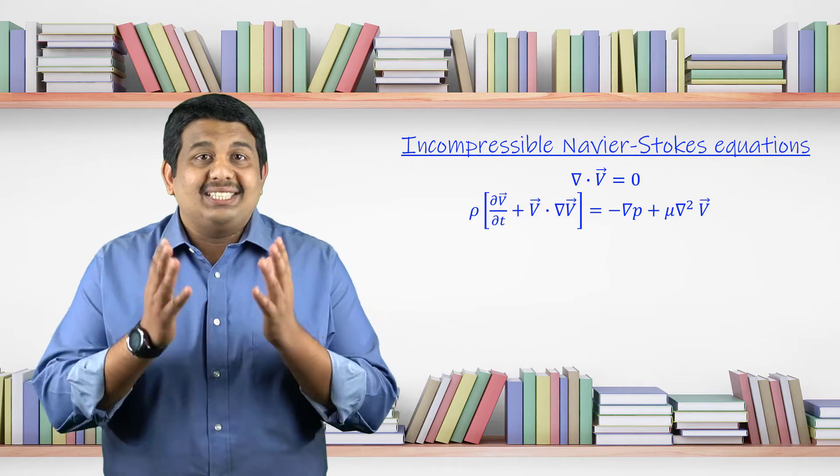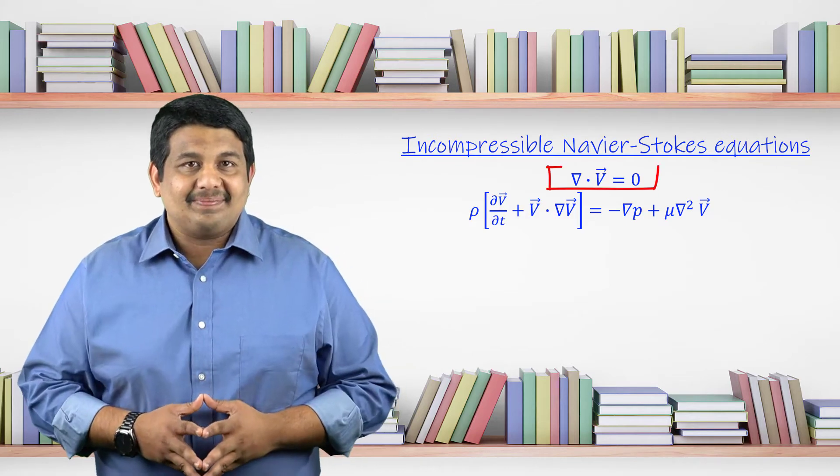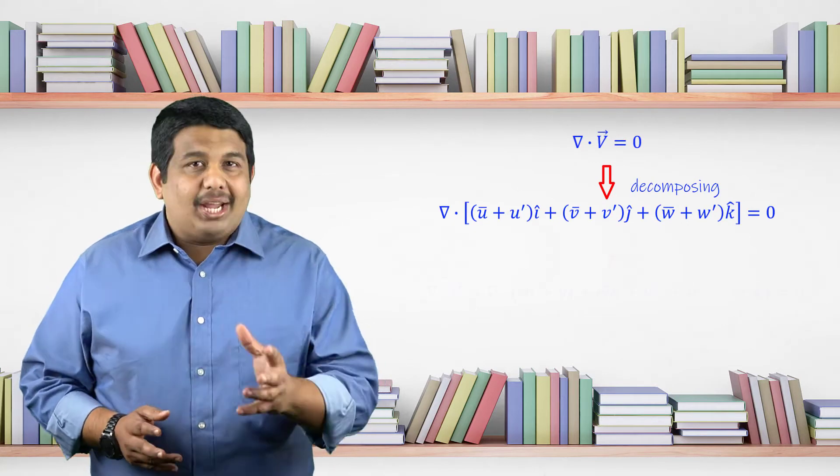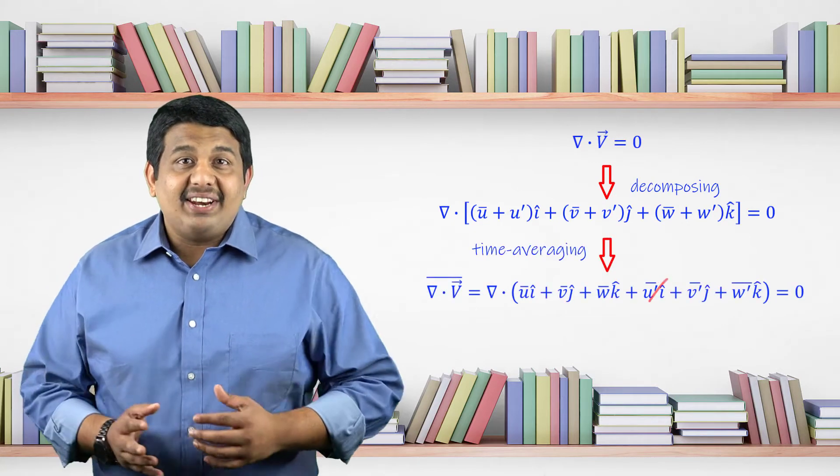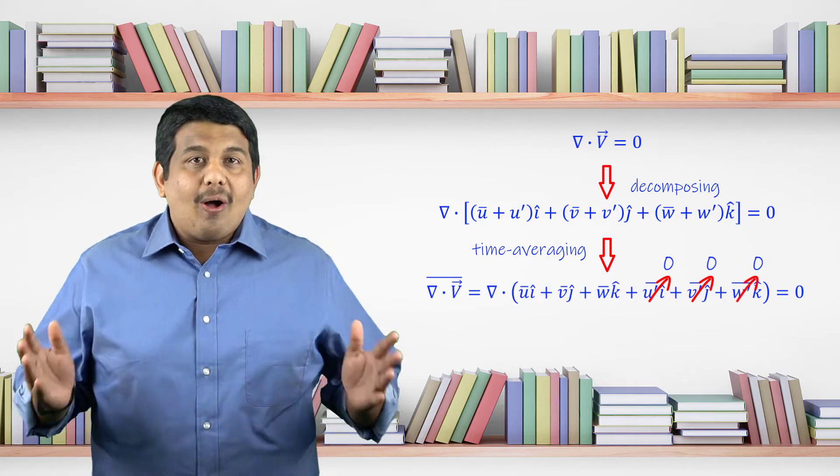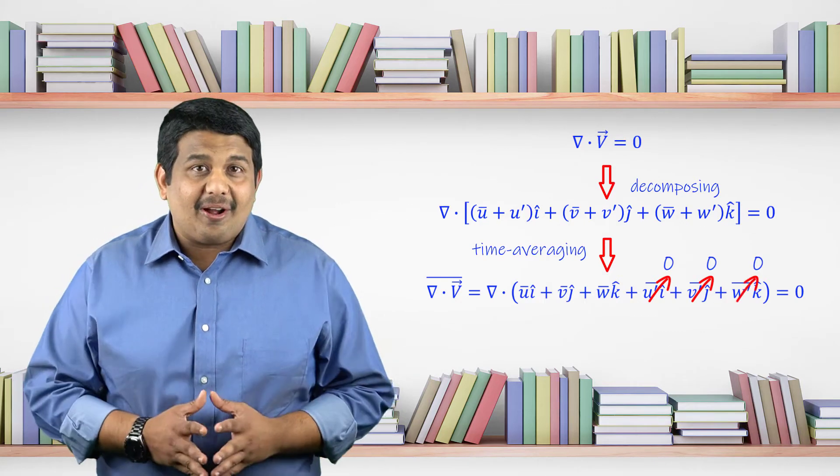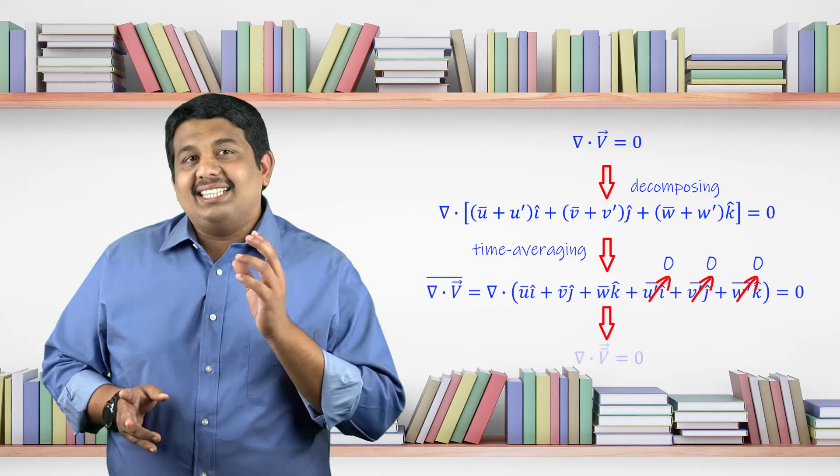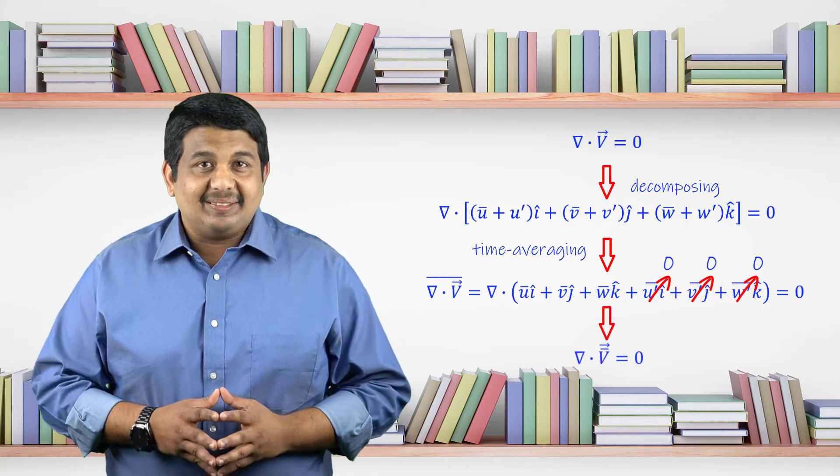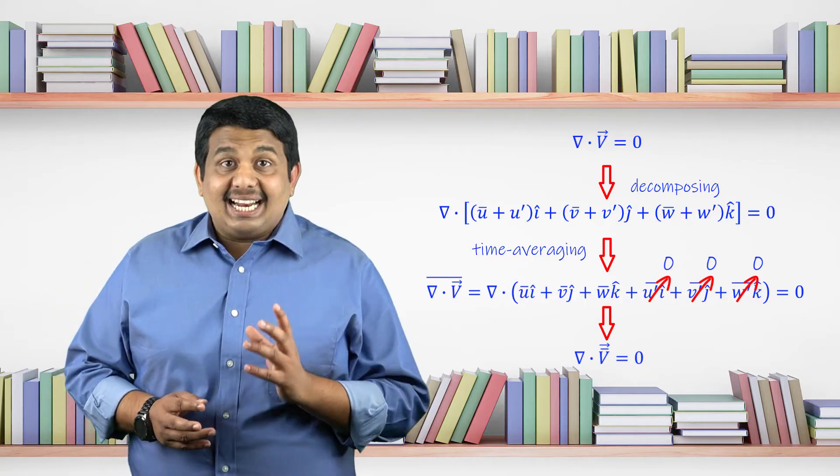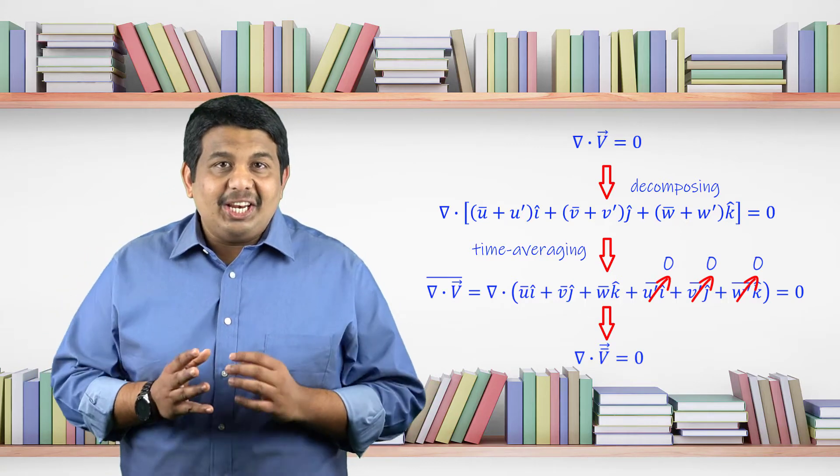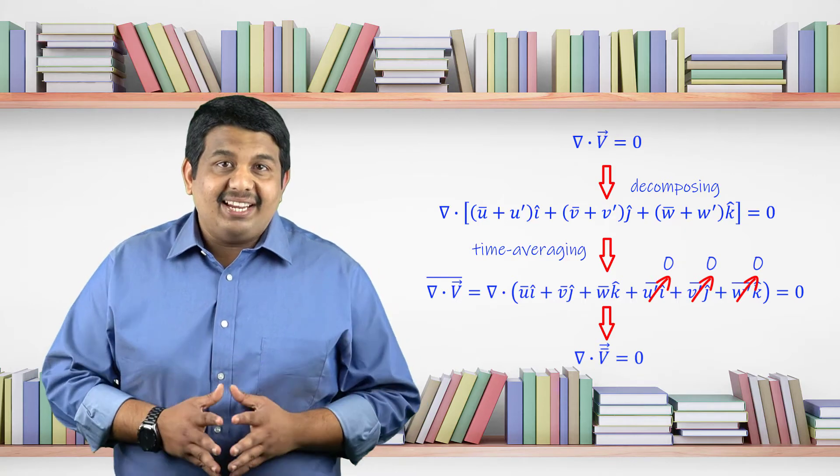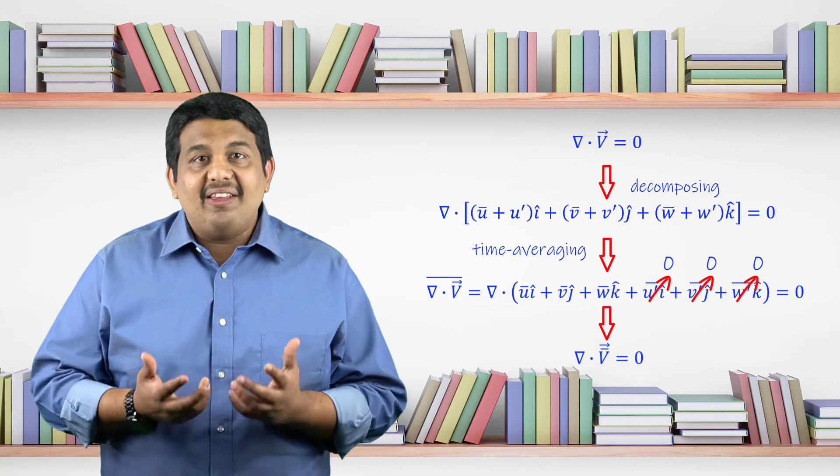Let us now decompose just the continuity equation. If we now time average, because of the fact that time averaging of fluctuations is zero, all the fluctuation terms can be dropped and we arrive at the following equation, which is the RANS momentum equation. This form is identical to the original continuity equation, except that it is now time averaged and is valid only for the mean flow.